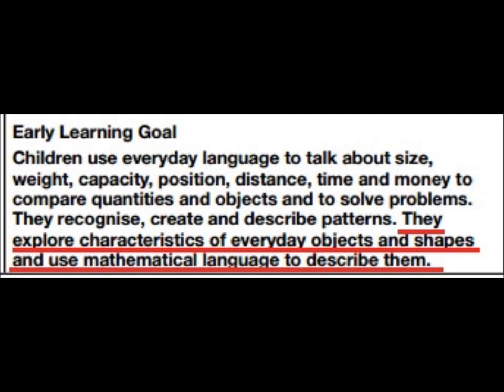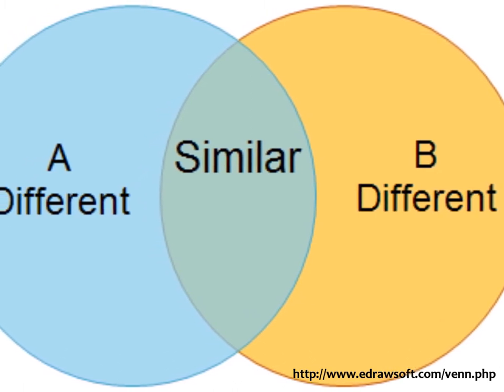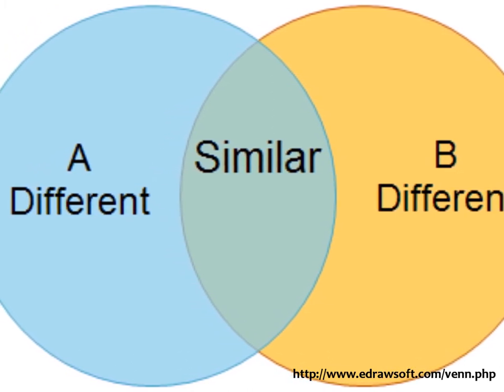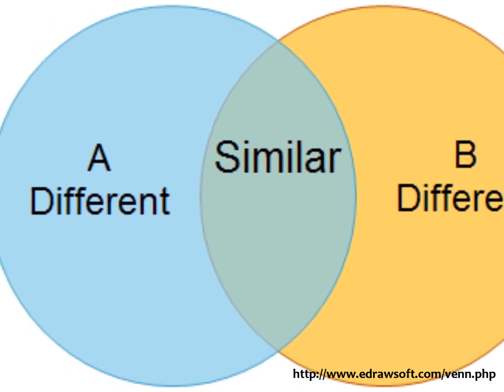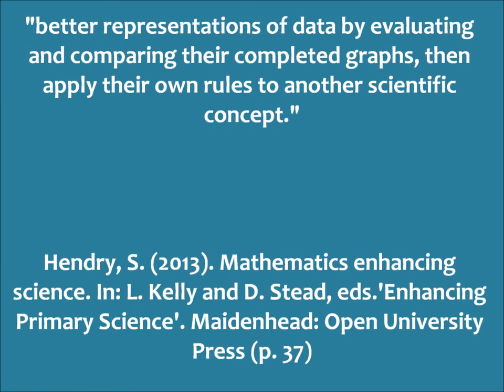So in order to decipher the world in which they live, children as young as four need to possess some mathematical understanding. It is not unusual, for example, to see children introduced to Venn diagrams at this stage to aid their understanding of categorising. By creating their own graphs to display test outcomes, children can begin to better understand representations of data by evaluating and comparing their completed graphs, then apply their own rules to another scientific concept.